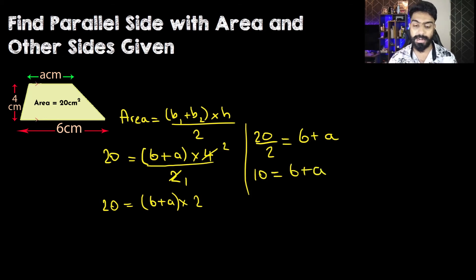We are almost at the end of the tunnel. Now we're going to transpose 6 to the other side. So we have 10 minus 6 equals a, therefore 4 equals a. The other parallel side is equal to 4 centimeters.